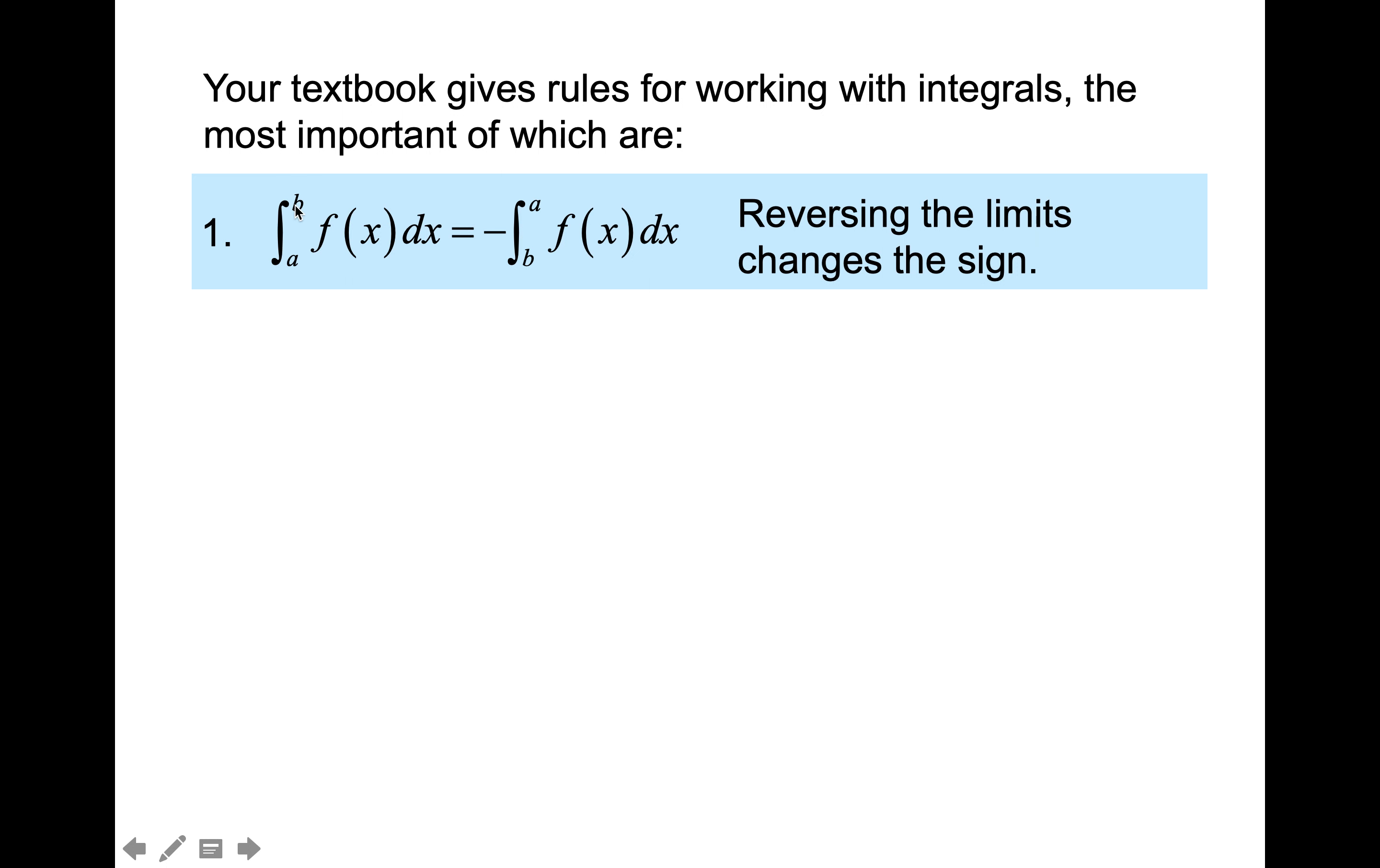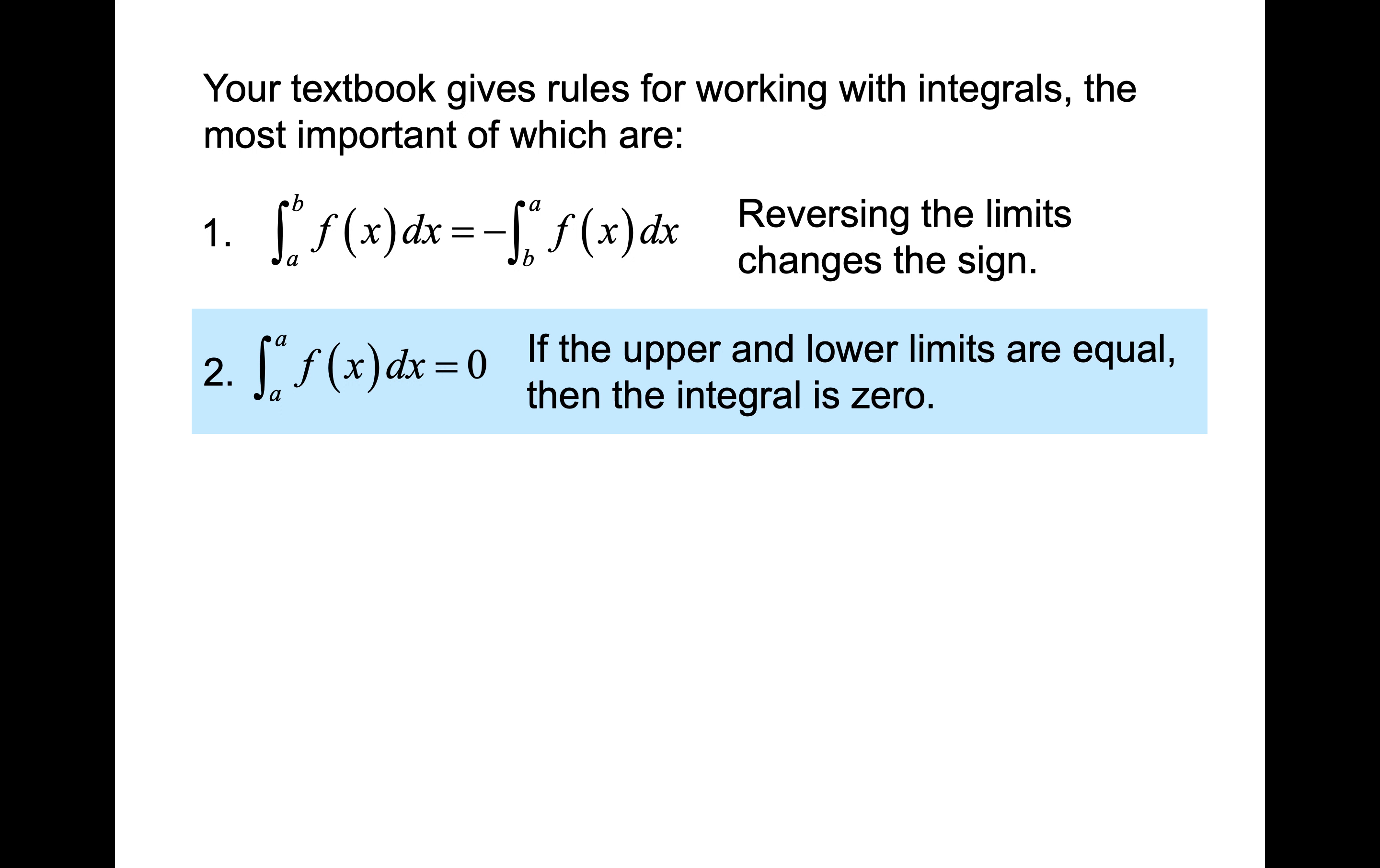So your textbook gives rules for working with integrals, the most important of which are: This first one says reversing the limits changes the sign. So notice here we're doing the integral from a to b, and here they switched it, the integral from b to a. So that will have the effect of changing the sign of that value.